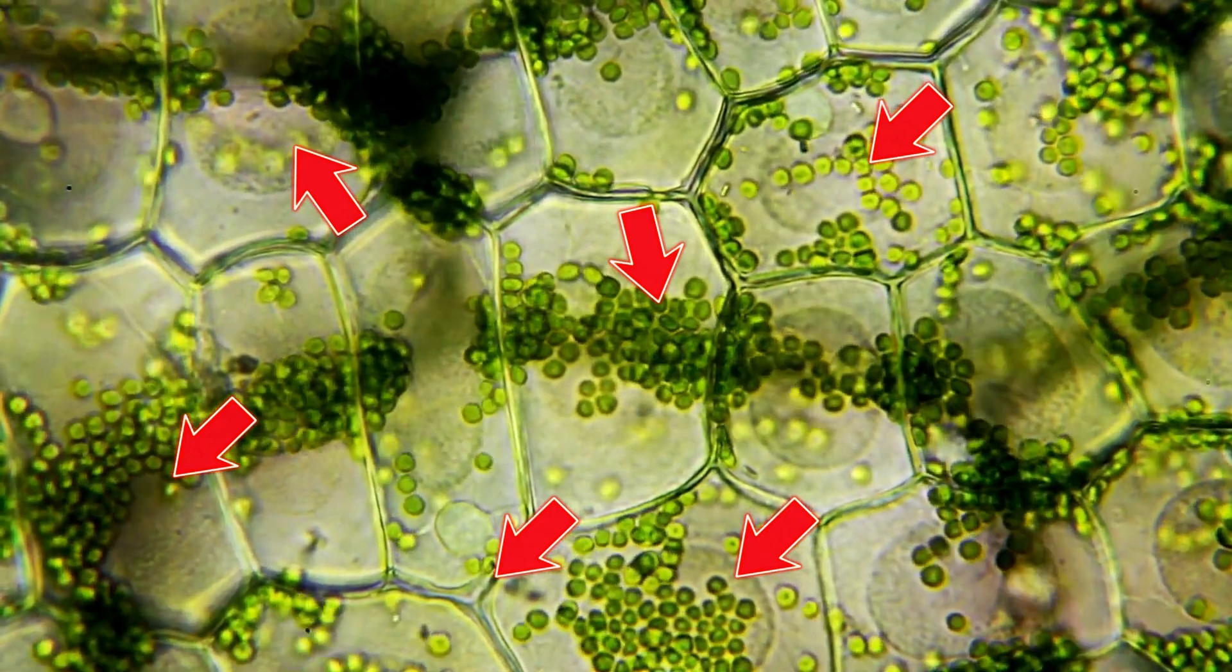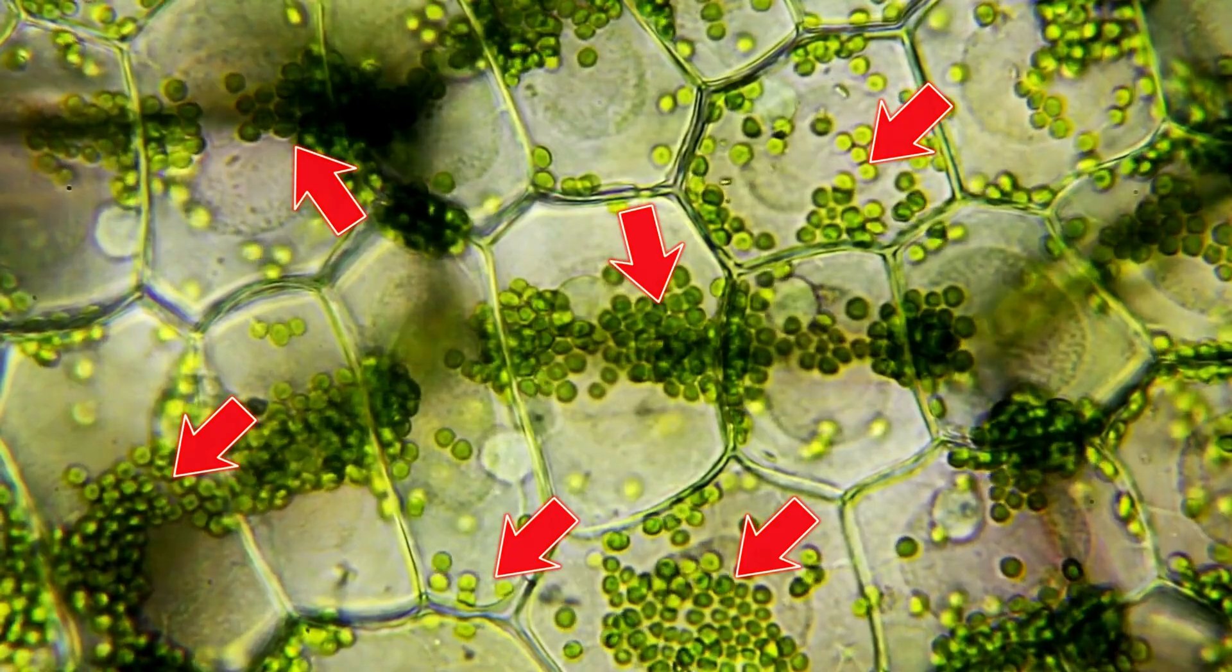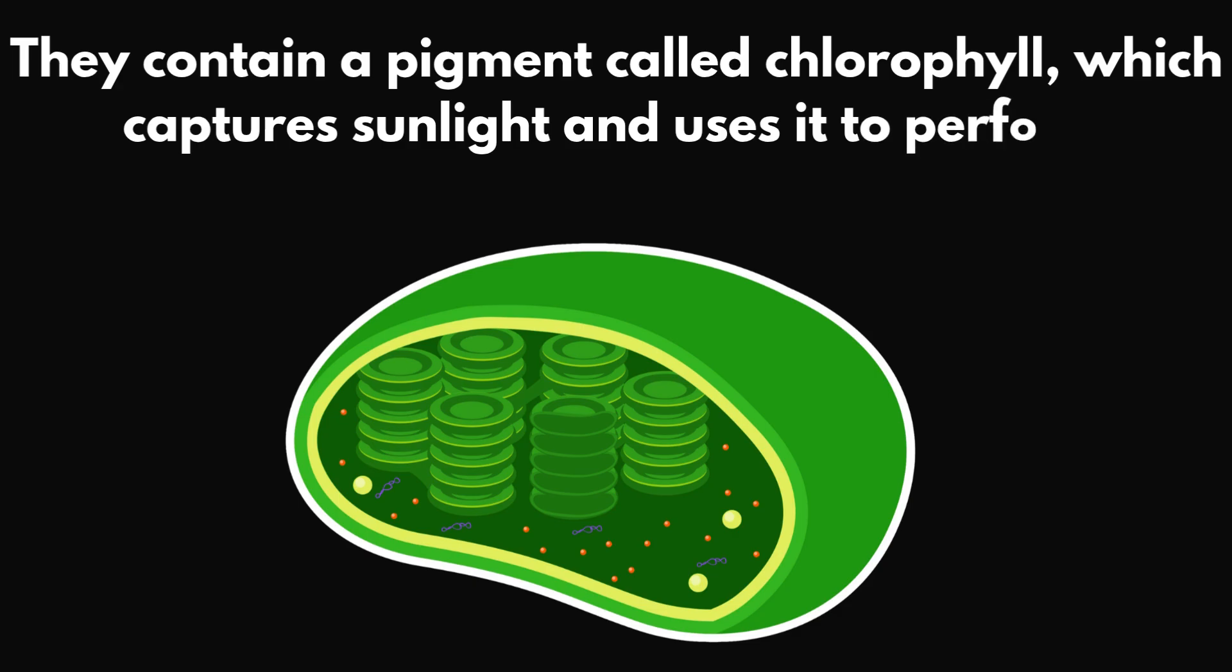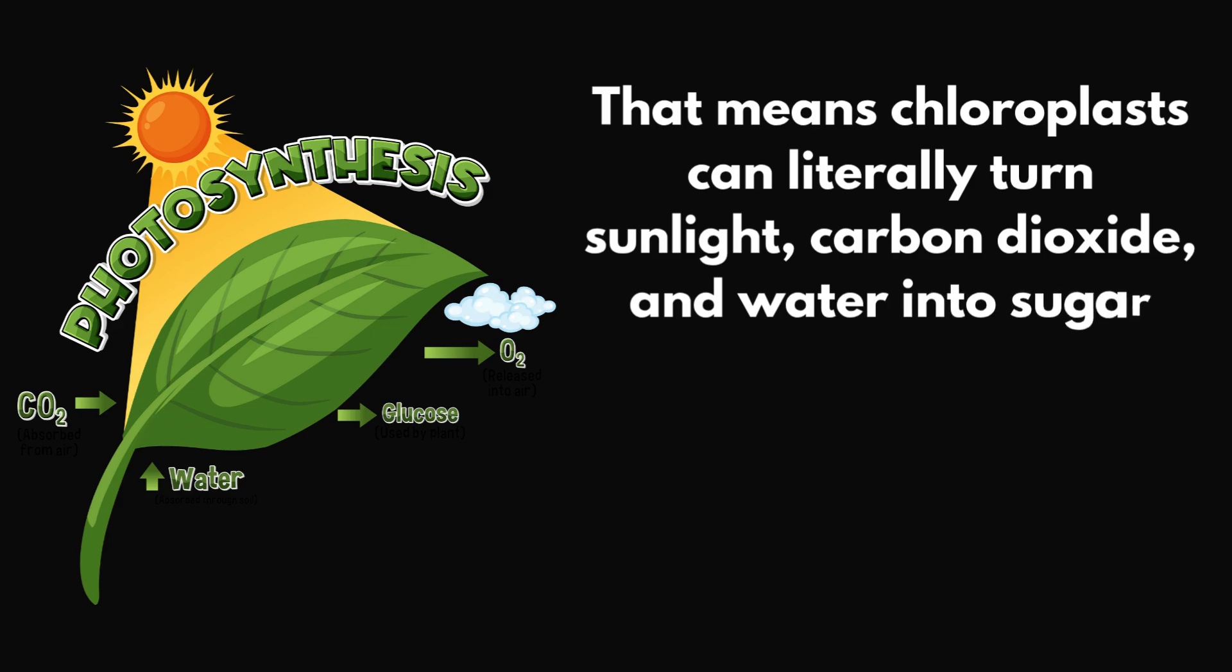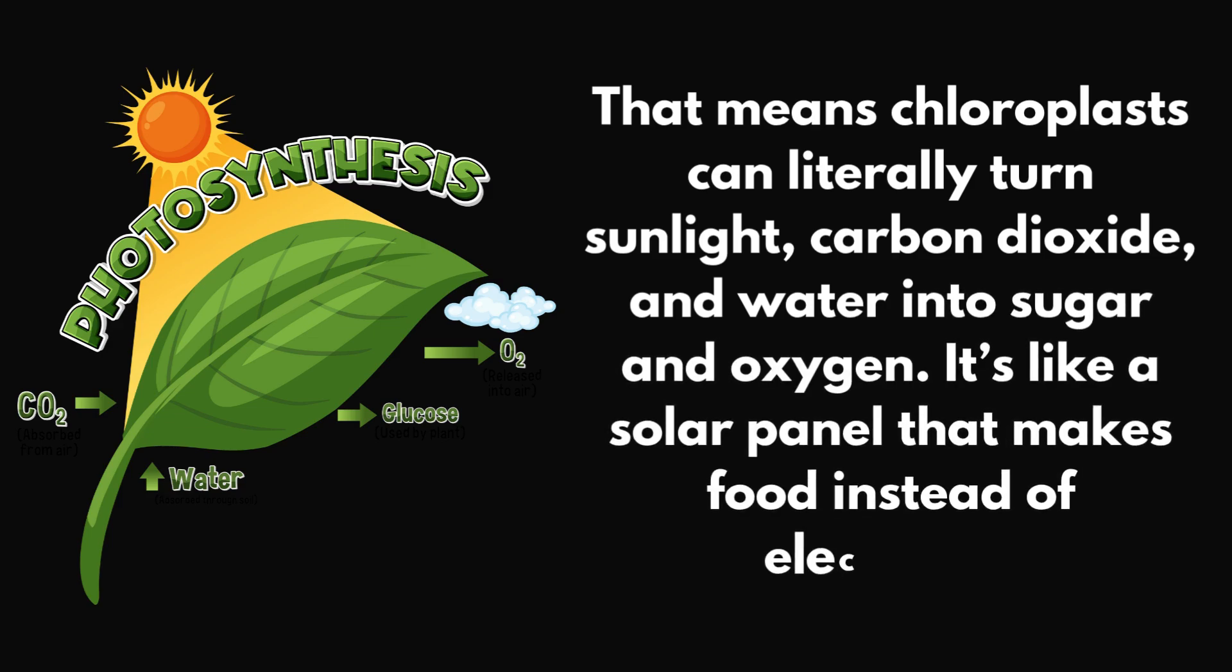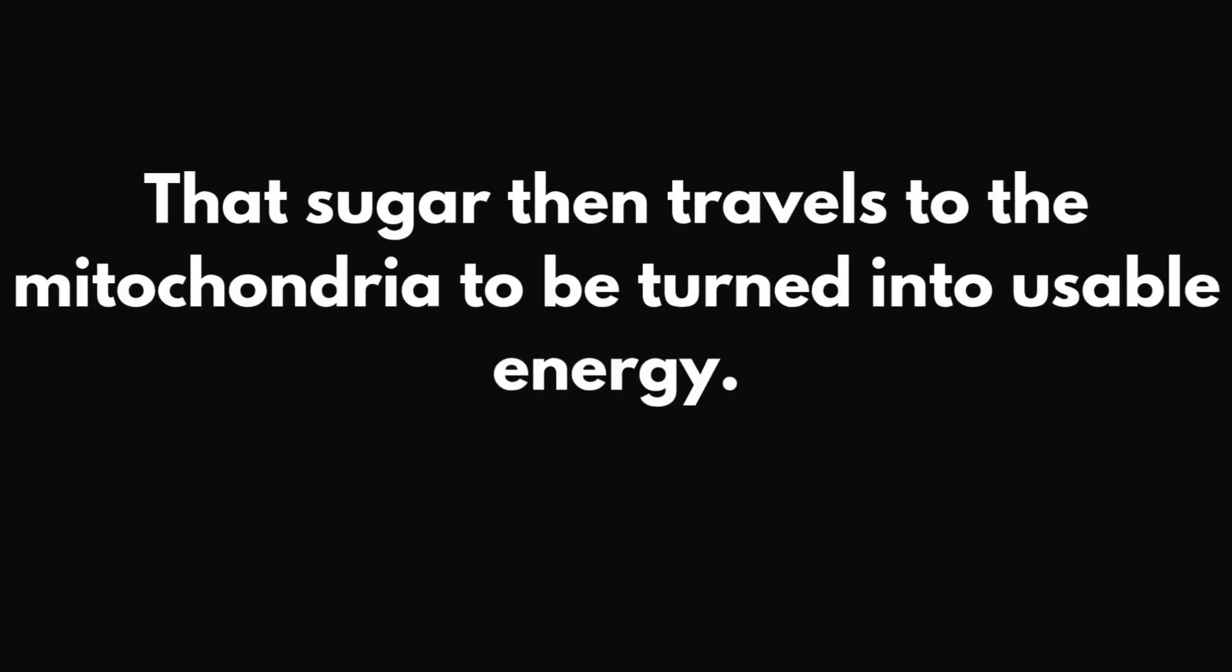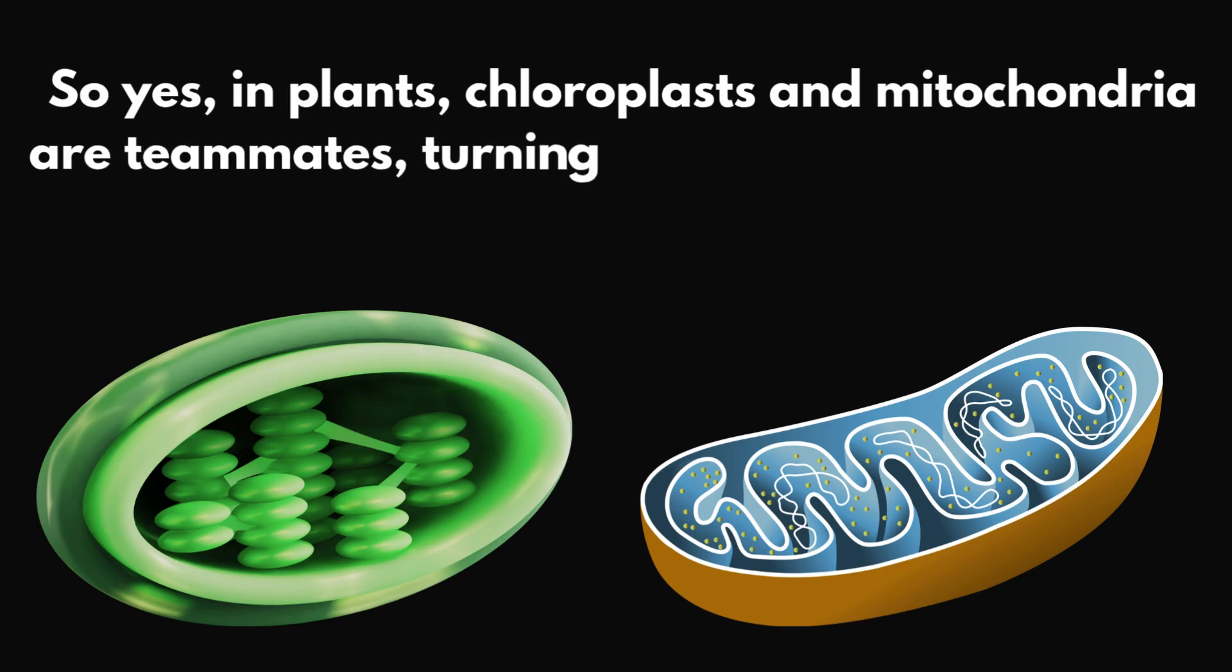Now here's something super cool. Chloroplasts. These are the green organelles found only in plant cells and some algae. They contain a pigment called chlorophyll, which captures sunlight and uses it to perform photosynthesis. That means chloroplasts can literally turn sunlight, carbon dioxide and water into sugar and oxygen. It's like a solar panel that makes food instead of electricity. That sugar then travels to the mitochondria to be turned into usable energy. So yes, in plants, chloroplasts and mitochondria are teammates, turning light into sugar and then sugar into energy. How amazing is that?